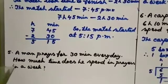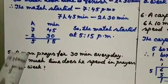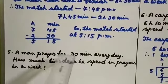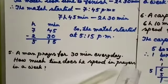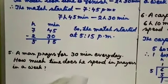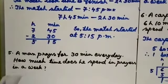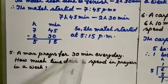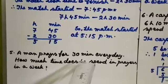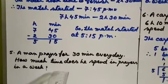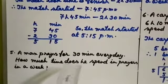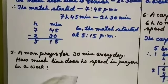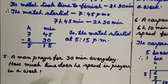Now see the next sum, question number 5. A man prays for 30 minutes every day. How much time does he spend in prayers in a week? That means per day for 30 minutes the man is praying, and for 7 days means 1 week means for 7 days. How much time does he spend? This is your question.